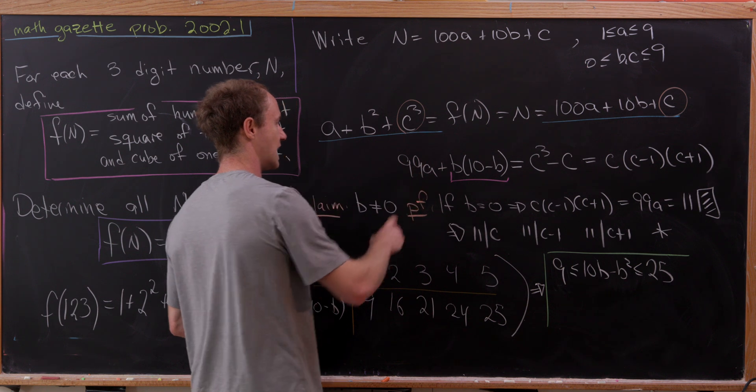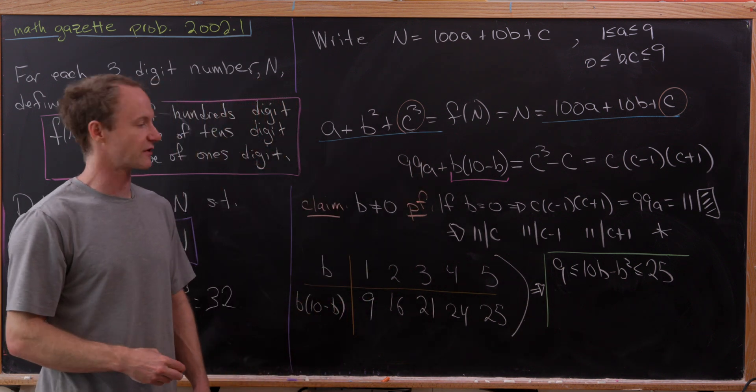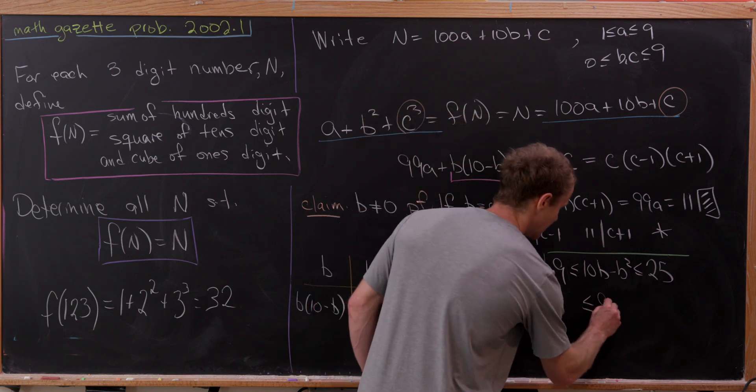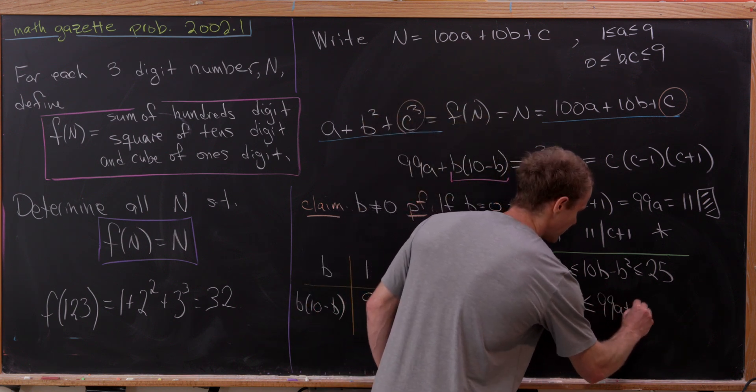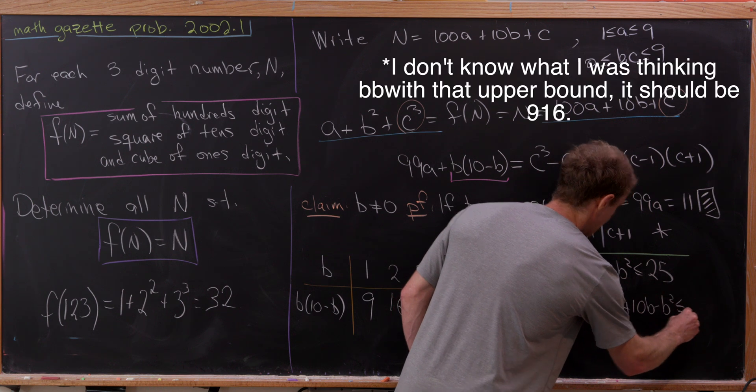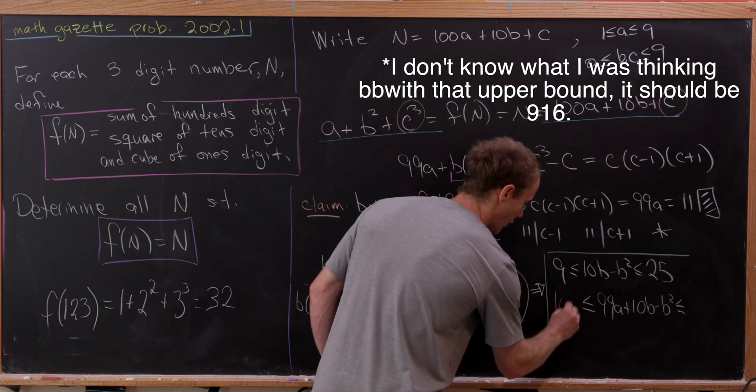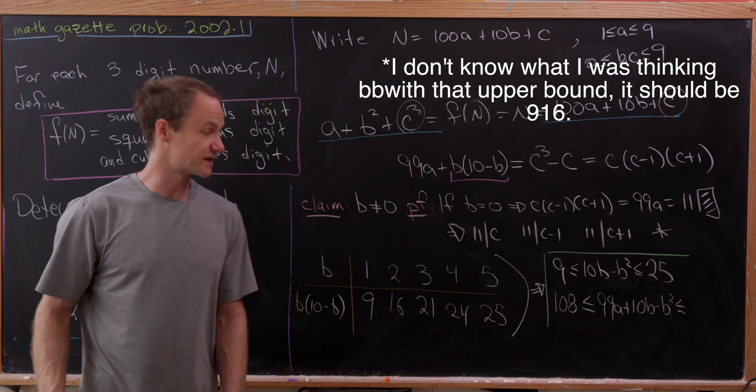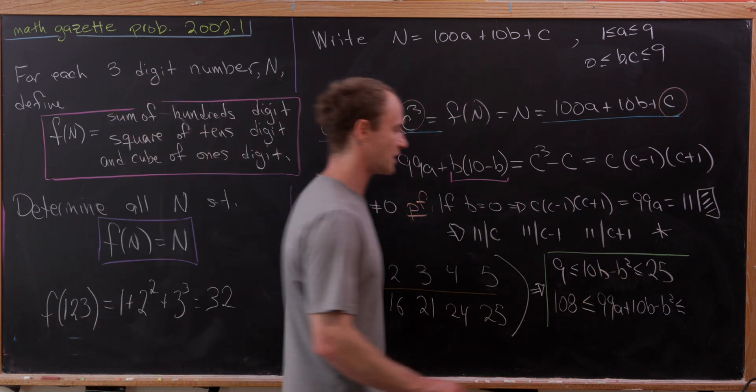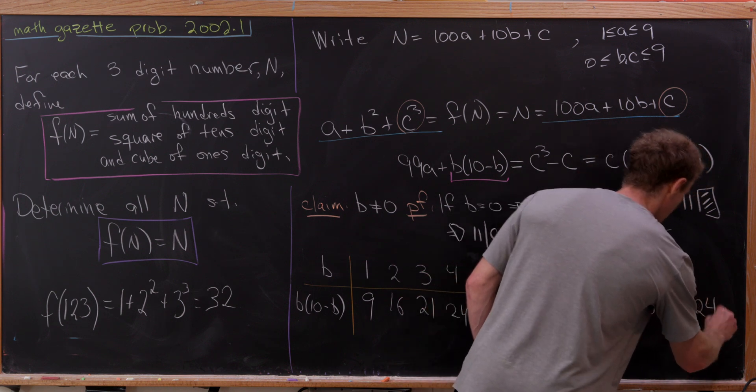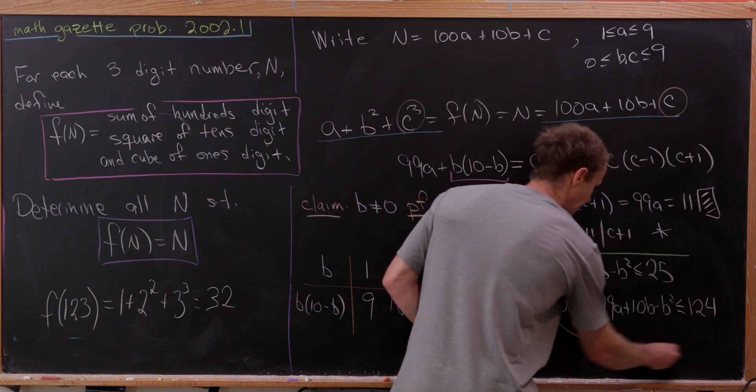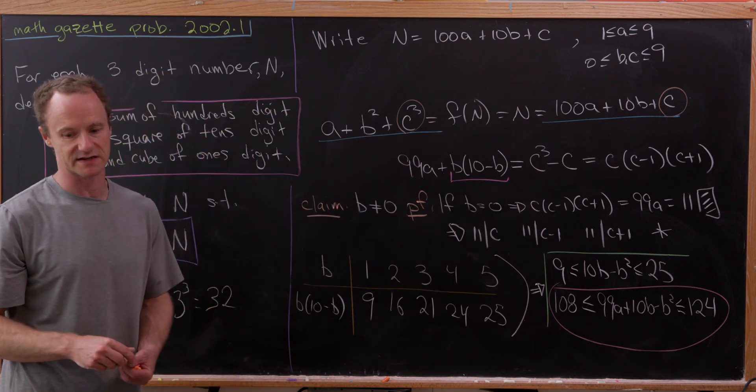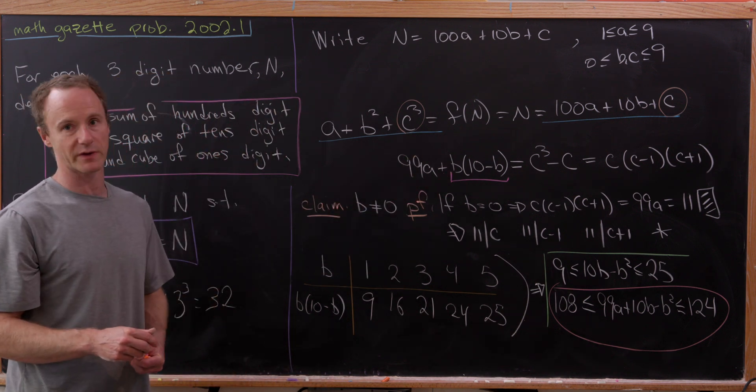But let's build that into this entire left-hand side. Observe that this 99 times a is bigger than or equal to 99. So adding 99 to all of these parts, we'll have 99a plus 10b minus b squared is sandwiched between 108 and 124. So we've got this nice inequality bound for the left-hand side and thus also for the right-hand side. We're running out of room, so let's see where we can go from there.